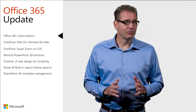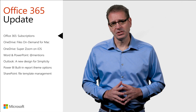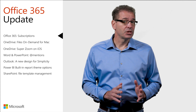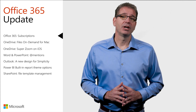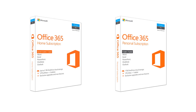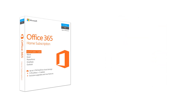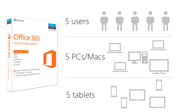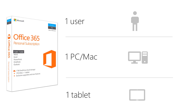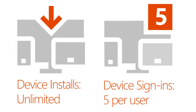I know some of you in our viewing audience subscribe to one of our Office 365 consumer plans. Good news if you fit that description and you, like me, have more than one device at home. Office 365 Home and Office 365 Personal subscriptions previously included device install limits. Office 365 Home limited subscribers to 10 devices in total across five users and Office 365 Personal limited subscribers to one PC or Mac and one tablet. As of October 2nd, subscribers can install Office 365 on an unlimited number of devices and be signed into their accounts on up to five of those devices at the same time.